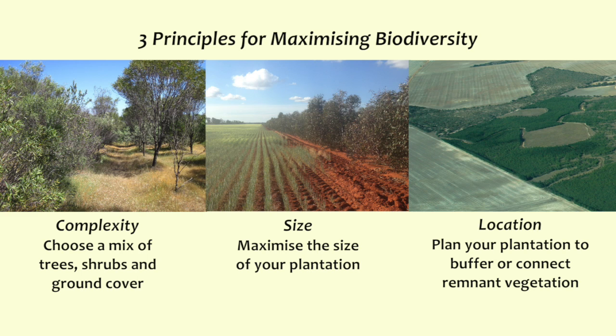In planning a biodiverse agroforestry system, there are three types of factors to consider. One is the complexity of that system itself, the second is the size of the plot, and the third is the location of that agroforestry system within the landscape.